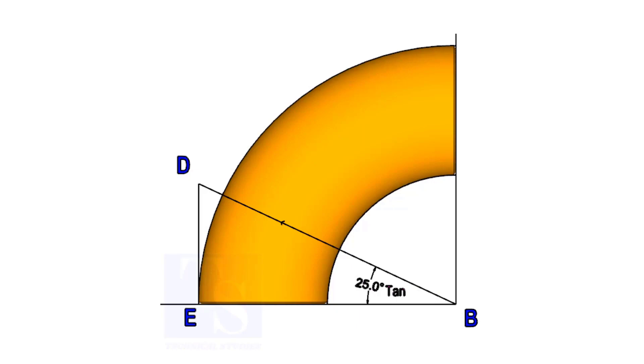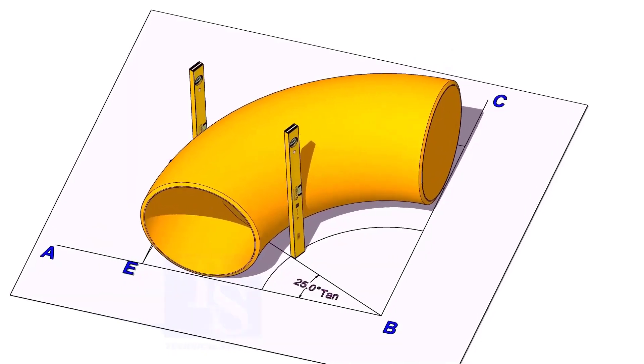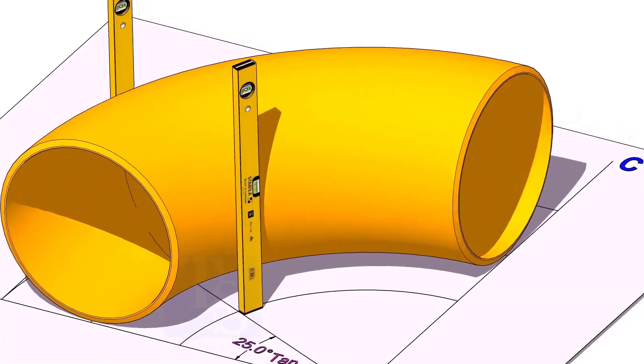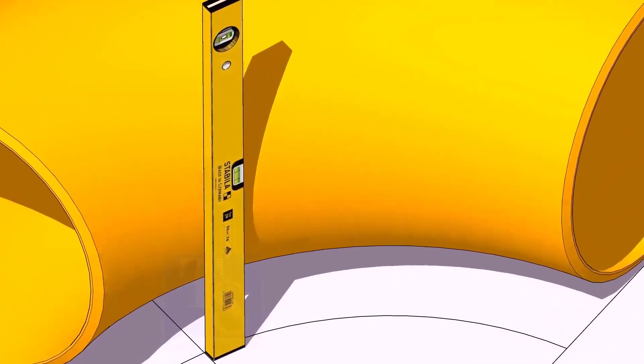Now, put the elbow exactly on the layout as shown. Hold two large level bottles at the edge of the elbow on both sides vertically, and strike a mark where the level bottle edge touches the elbow.